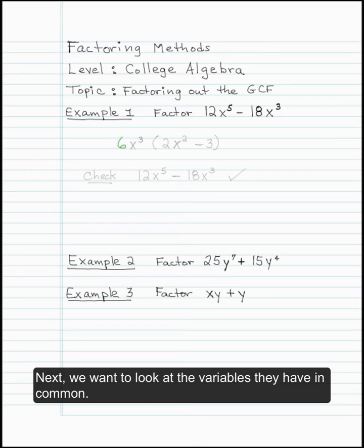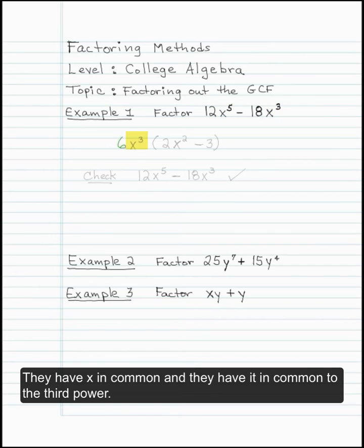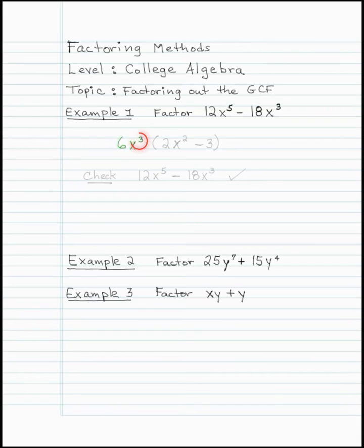Next, we look at the variables they have in common. The first term has x to the 5th. The second term has x to the 3rd. They have x in common to the 3rd power. So the GCF is 6x to the 3rd.